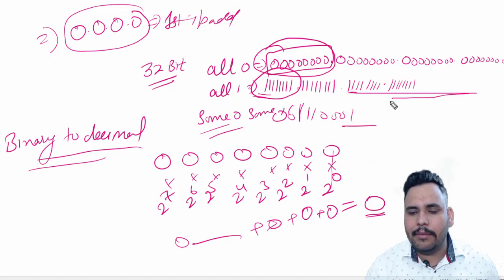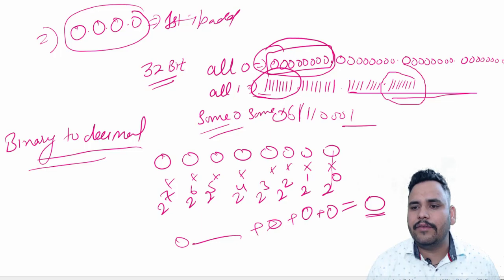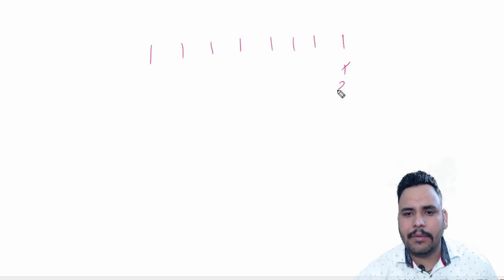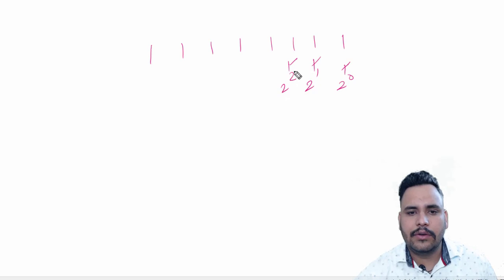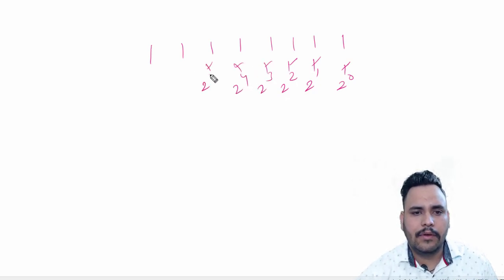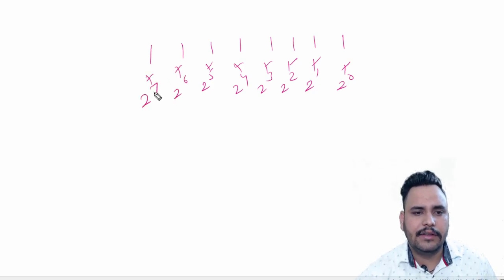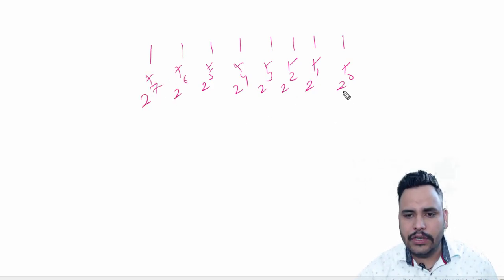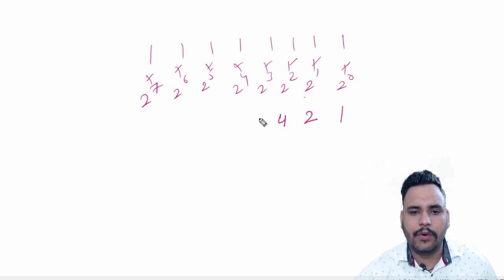Now I am going to do binary to decimal of 1 1 1 1 1 1 1 1. You can check here: 8 bits multiplied by 2 raised to the power of 0, 1, 2, 3, 4, 5, 6, and 7. So 2 to the power of 0 is 1, 2 to the power of 1 is 2, 2 to the power of 2 is 4.